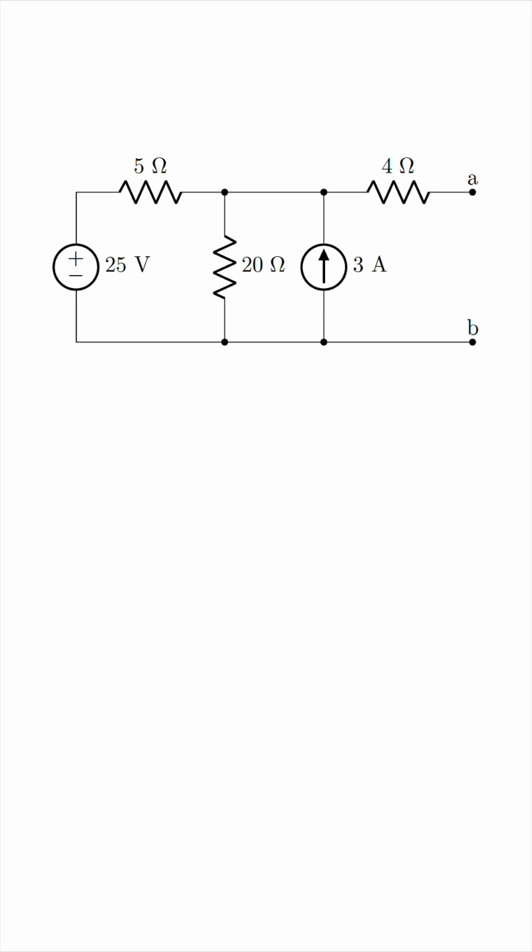The first thing to notice is that we have a voltage source in series with a resistor over here. This can be replaced with a current source of 25 divided by 5, so that's 5 Amperes, and then this 5 Ohm resistor would come down in parallel. This helps because we have those two resistors in parallel now.